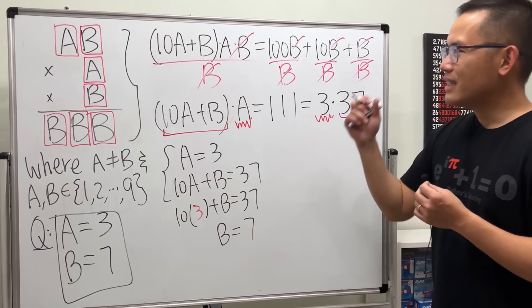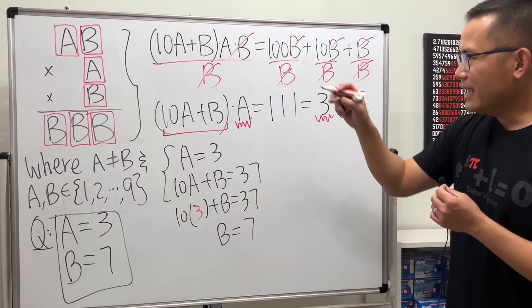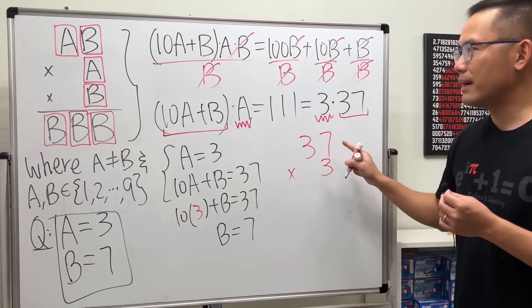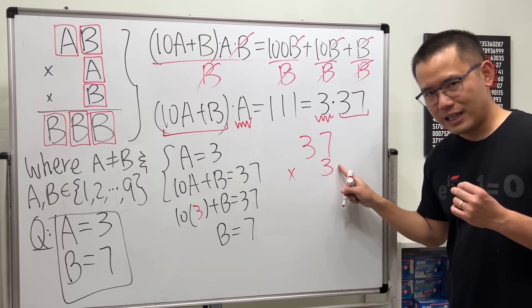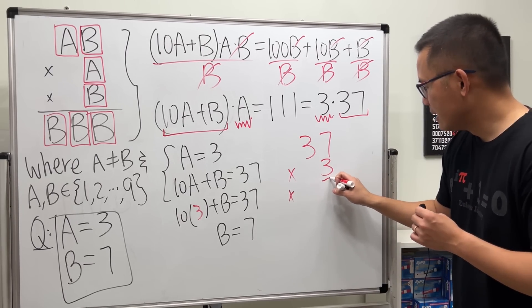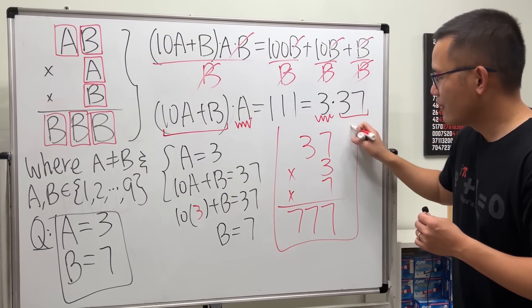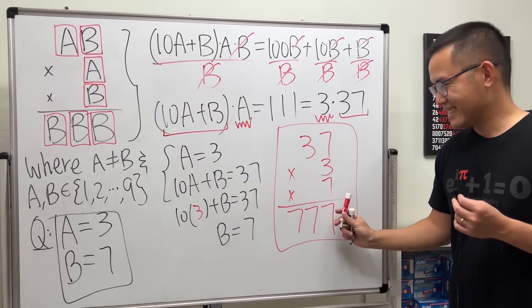So that expression actually looks like 37. If we multiply that by 3, we will get 111, and then multiply by 7, we will end up with 777. A very cool result in my opinion. That's it.